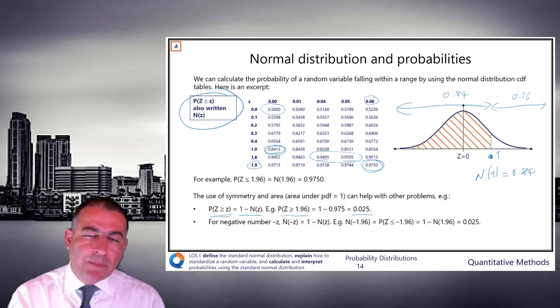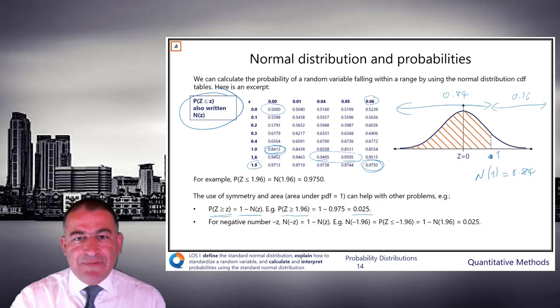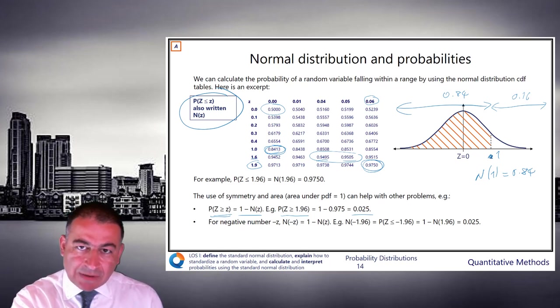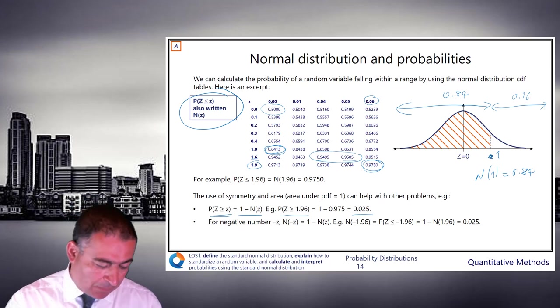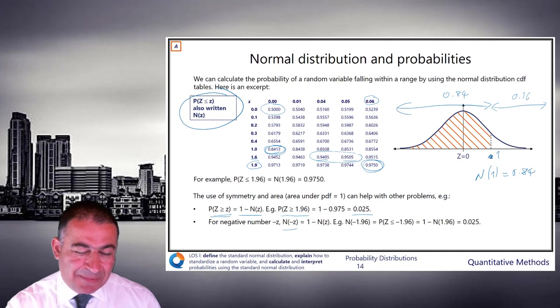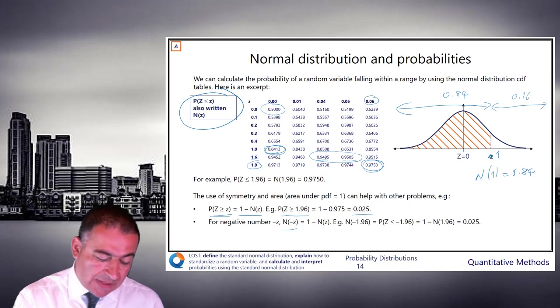For negative numbers, we also use symmetry. Because if you could take, for example, 1, the area above 1 is 16%. The area below minus 1 is also 16%. So minus z, n of minus z is 1 minus n of z. So basically z is positive here, so minus z is your negative number. n of minus z is 1 minus n of z.